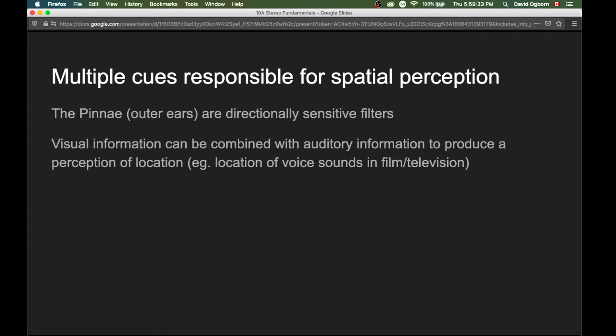Visual information, in this sense, has the potential to override the information that arrives at our ears or to override information that we might otherwise know about where loudspeakers are, about where sound sources are actually physically located in a given situation.